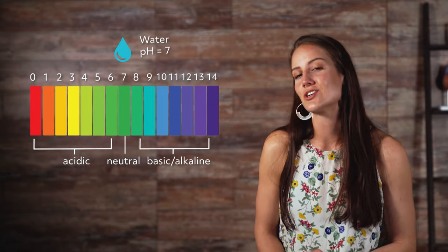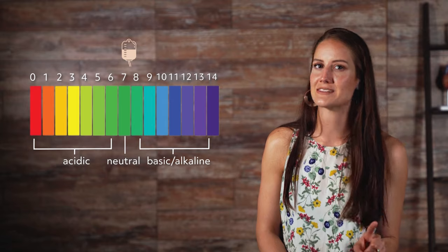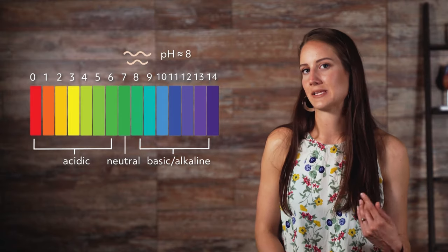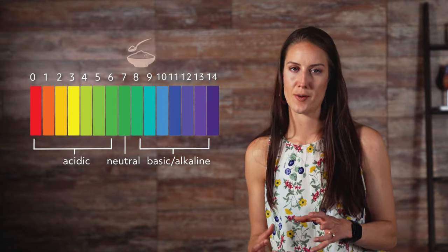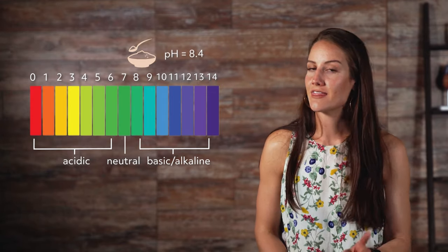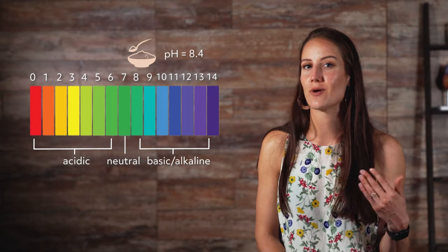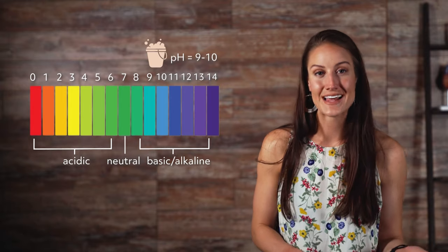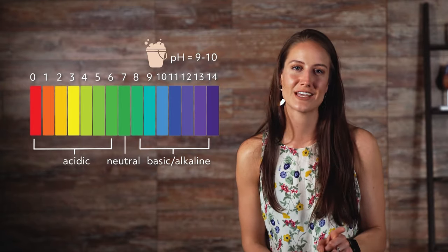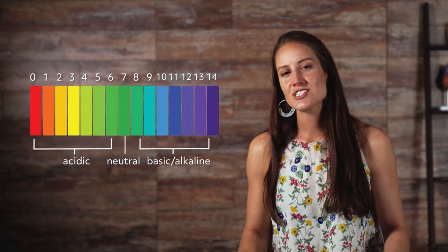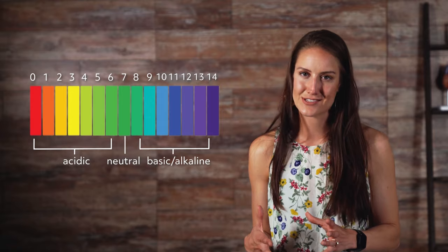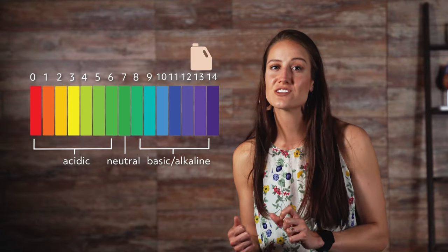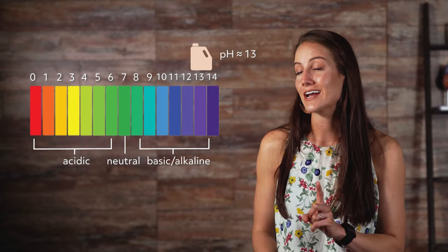Pure water is neutral with a pH of 7. Blood is slightly basic with a pH value of 7.4. Seawater has a pH value of approximately 8. Solutions of baking soda are mildly basic with a pH value of 8.4 — therefore, baking soda is used to clean up small acid spills in chemistry labs. Soapy water has a pH value of 9 to 10, which helps remove grease from your skin or dirty dishes. Just as strongly acidic solutions pose hazards, so do strongly basic solutions. Lye, oven cleaner, and household bleach have a pH value of approximately 13, so be careful around them.